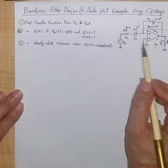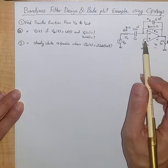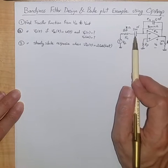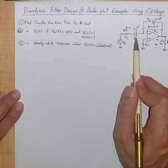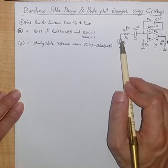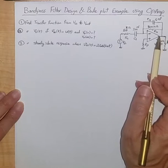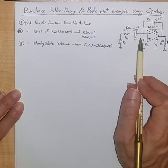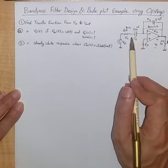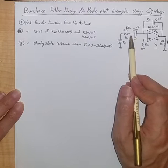This op amp is intuitively a band pass filter because when the frequency is near zero, the impedance of this capacitor is nearly infinite, so there is nothing from the input that can go to the output, and the output goes to zero. So it cannot pass low frequency components. At very high frequency, the impedance of this capacitor goes to nearly zero — it's a short.